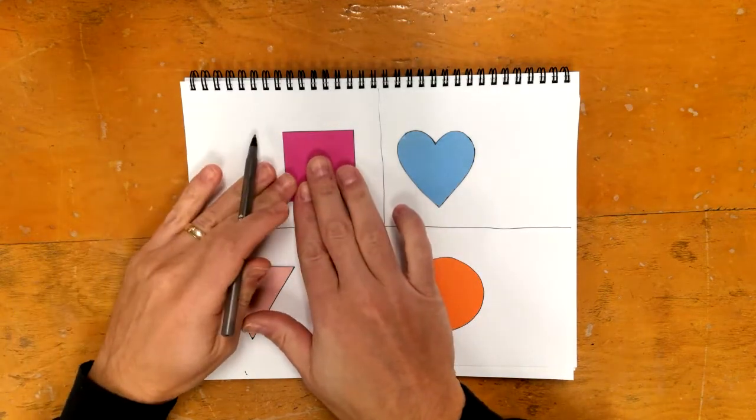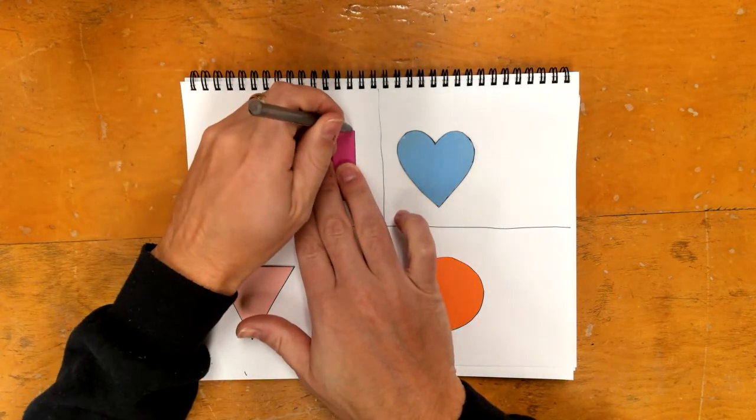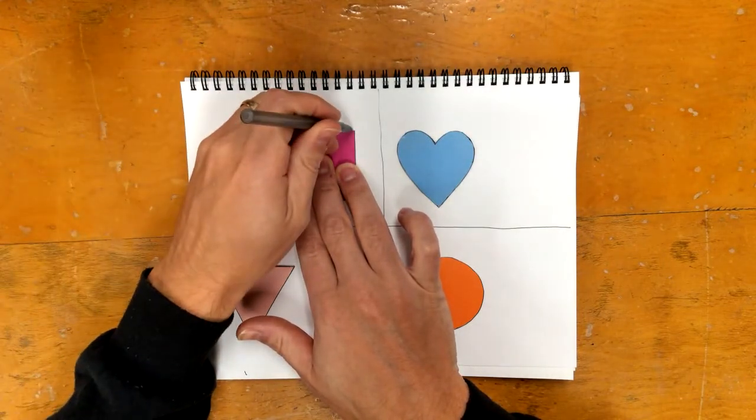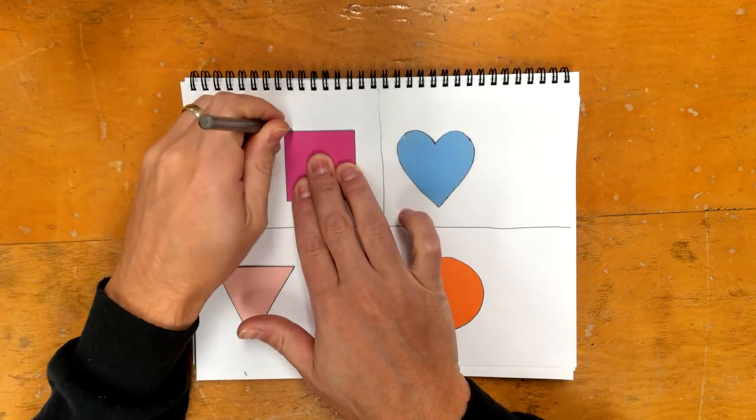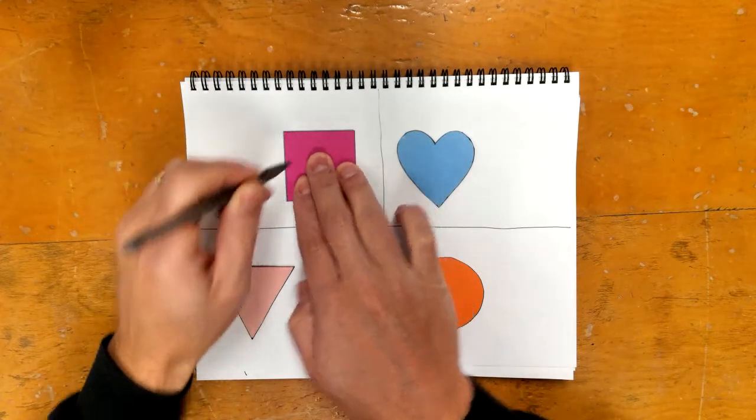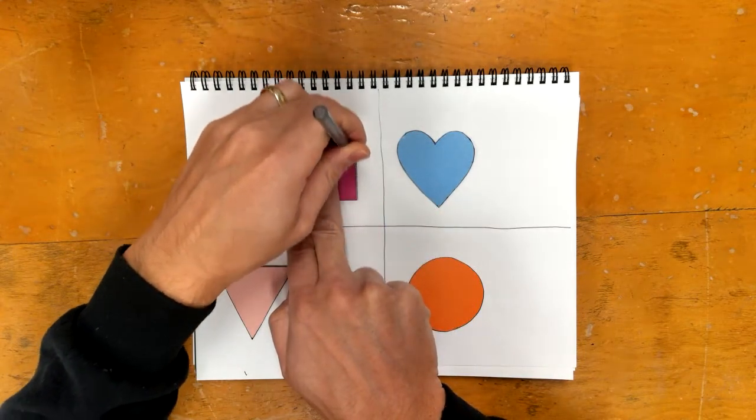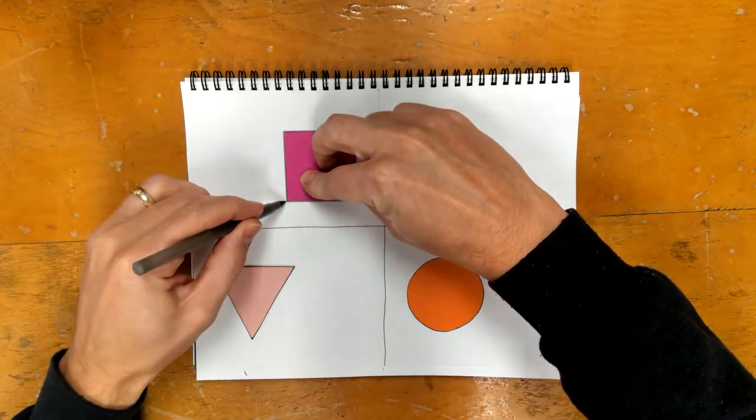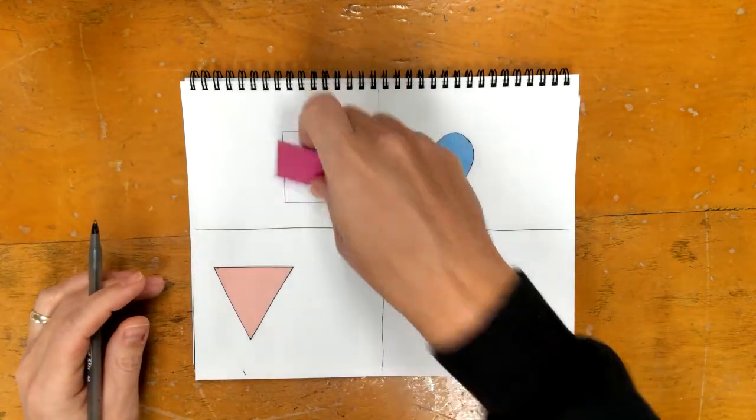So I'm going to start with the square. You can start with whatever shape you want. Again, pencil or again, I'm using pen, but you guys are using pencil is going to be straight up and down. And I can take that off.